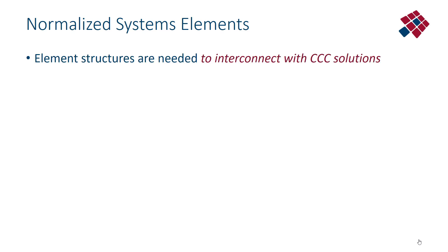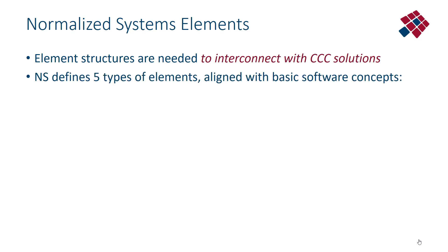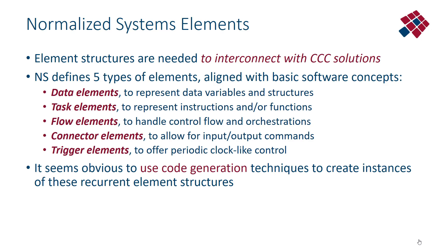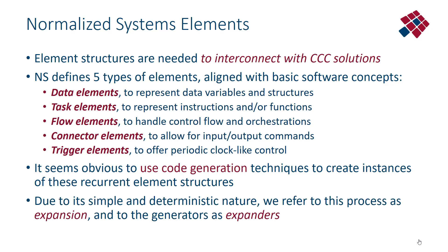We have seen in previous parts that we need element structures, that we need to transform functional entities into element structures that interconnect with the cross-cutting concern solutions. We have defined five types of elements closely aligned to the basic fundamental software concepts underlying all processors and programming environments. We have also stated that it seems obvious to use code generation techniques to create instances of these recurrent element structures, and we call these code generators expanders and the process expansion, because we use highly simple structured templates which are quite deterministic in nature.